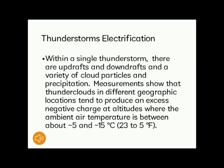Thunderstorm electrification: within a single thunderstorm, there are updrafts and downdrafts among a variety of cloud particles and precipitation. Measurements show that thunderclouds in different geographic locations tend to produce an excess negative charge at altitudes where the ambient air temperature is between about negative 5 and negative 15 degrees Celsius. Positive charge accumulates at both higher and lower altitudes, creating a high electric field and the possibility of significant electrical activity.